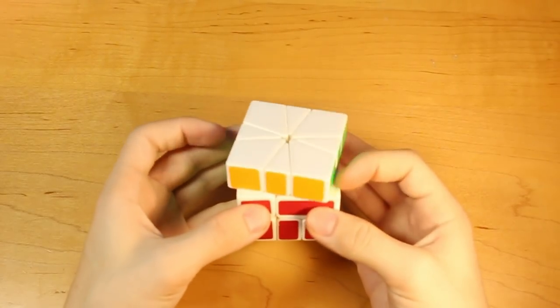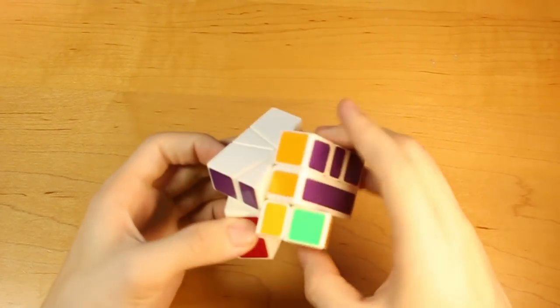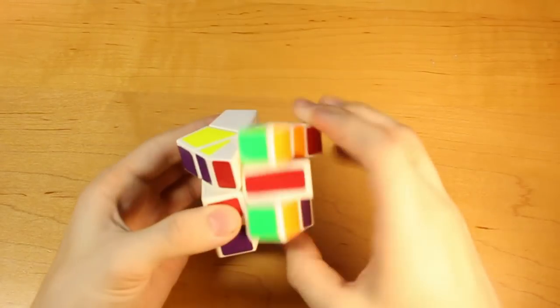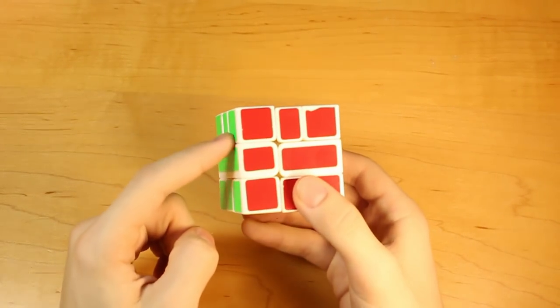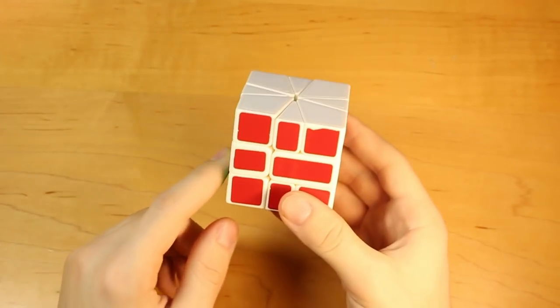This is just a Guan Long. Or a Square-long. Or whatever you want to call it. This is one of the very first square-1s to be mass produced that had a proportional middle layer to the U and D layers. So that's pretty cool.